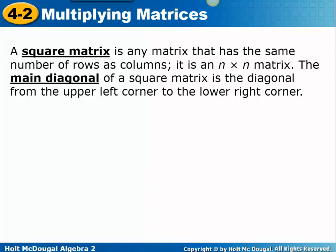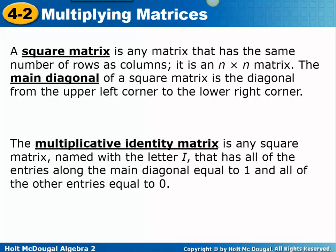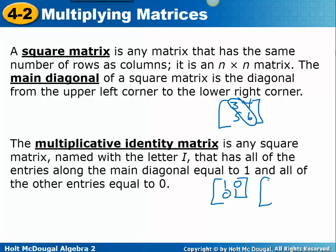A square matrix has the same number of rows and columns — like a 2×2 or a 3×3. The main diagonal of a square matrix is the diagonal from the upper left corner to the lower right. The multiplicative identity matrix is any square matrix named with the letter I that has all entries along the main diagonal equal to 1 and all other entries equal to 0. A 2×2 identity matrix looks like: 1, 0, 0, 1. A 3×3 would have 1s all along that diagonal and 0s everywhere else.